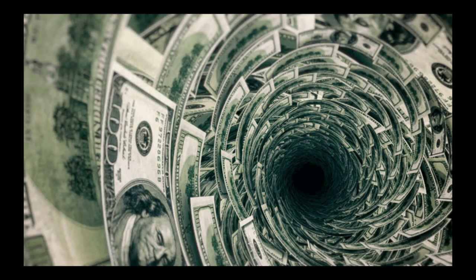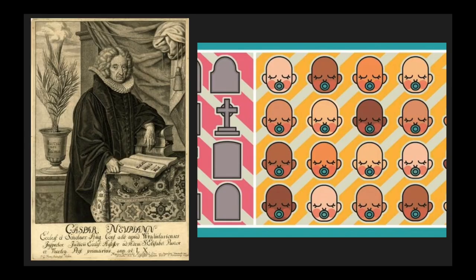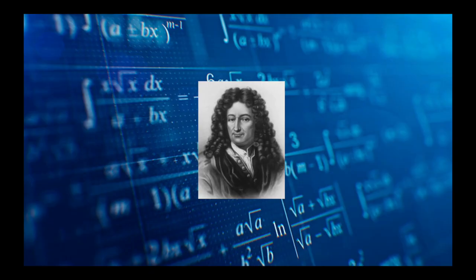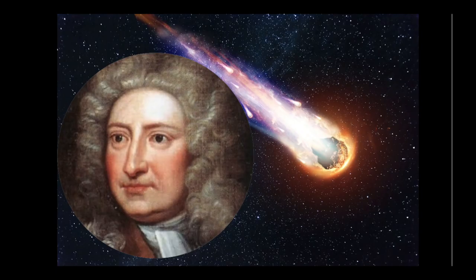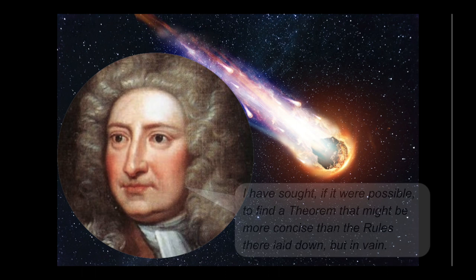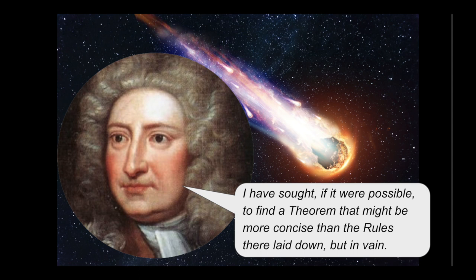In the last video, we saw that Casper Neumann collected mortality data on a small European town, so it wasn't distorted by migration like the London mortality data. Neumann sends the data to Leibniz, who wasn't really that interested, so the data ends up with Edmund Halley. He uses his mathematical magic to price annuities based on a person's age, but the maths gets too difficult and he admits he failed to handle more complex life assurance problems.